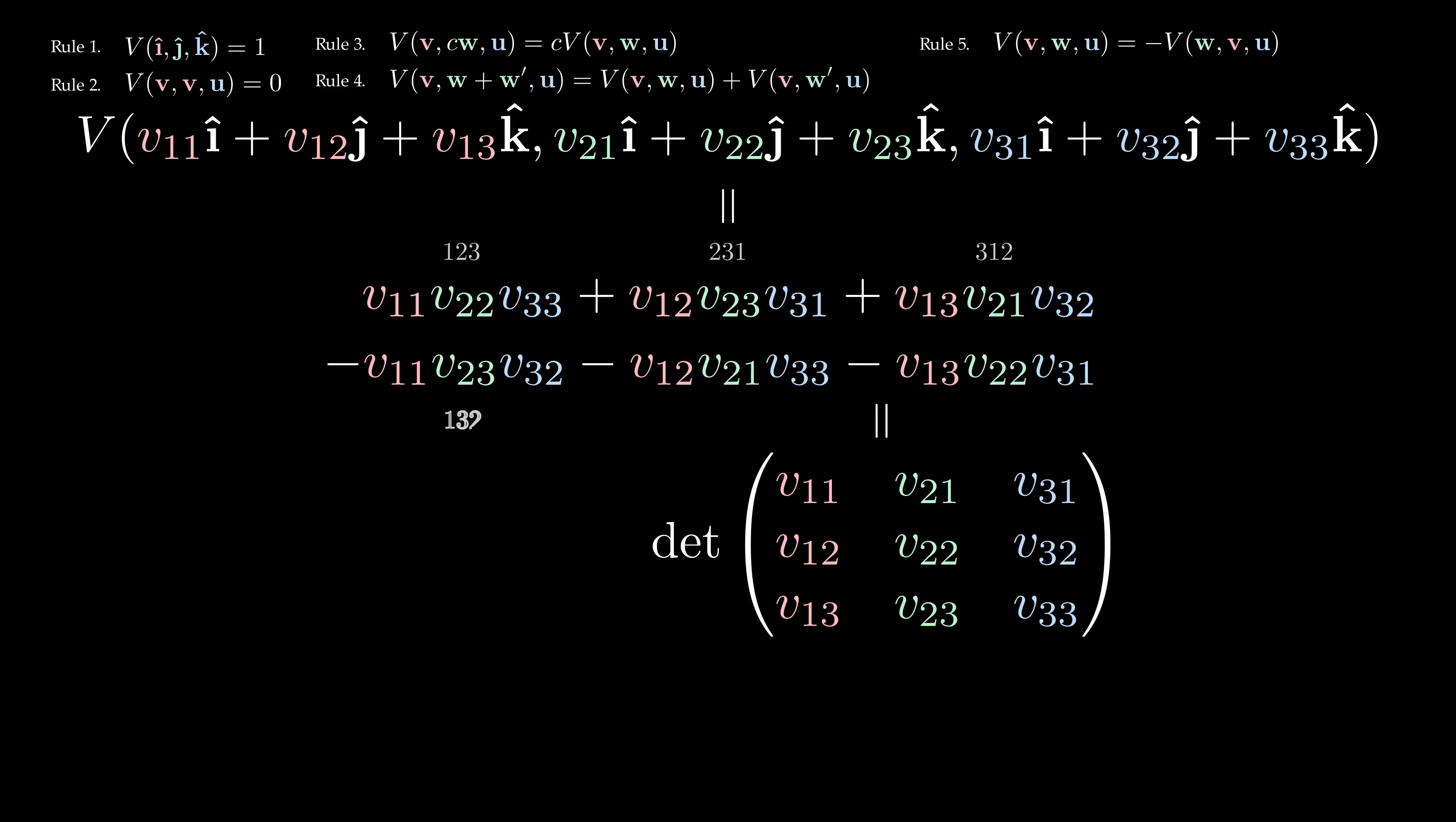In fact, since there are 3 factorial or 6 permutations of 1 to 3, we see that these terms cover every single permutation. We'll come back to these ideas shortly.